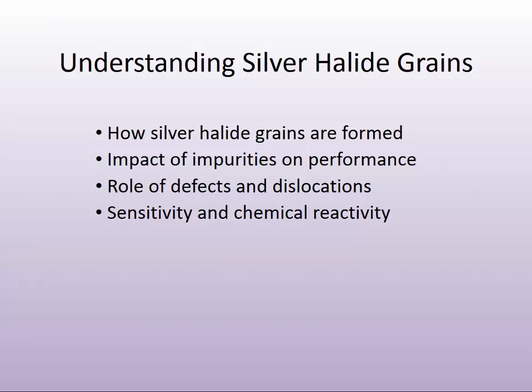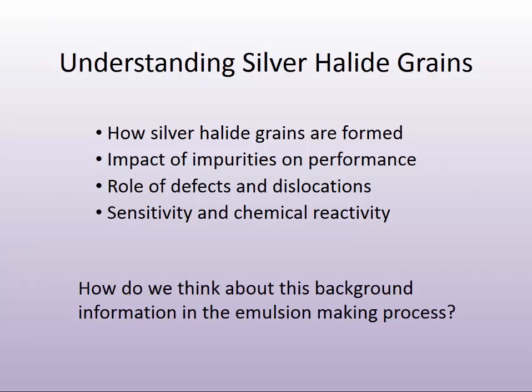I hope at this point we have a greater appreciation for all that's going on in what seems to be a very simple-looking silver halide grain — how the silver halide grain is formed, the impact of impurities on the performance of the silver halide, the role that defects and dislocations may have in the sensitivity and the chemical reactivity of silver halides. So how does the emulsion chemist think about all of this background information in their emulsification-making process?